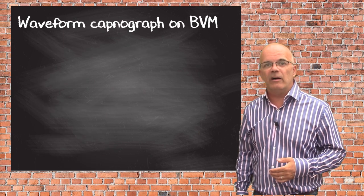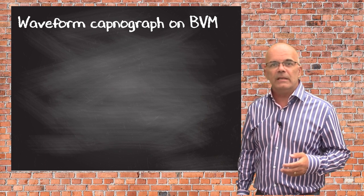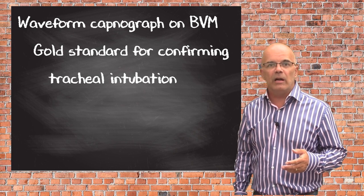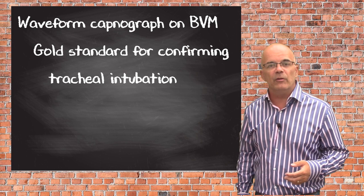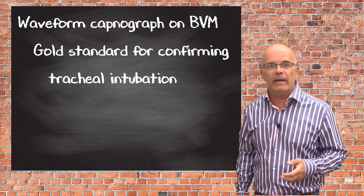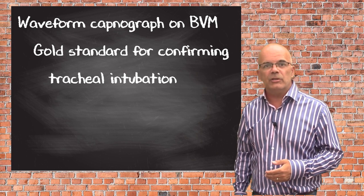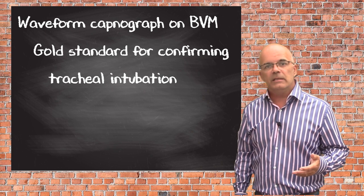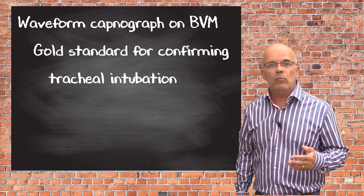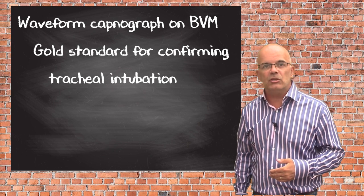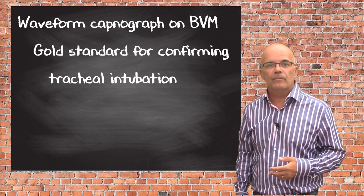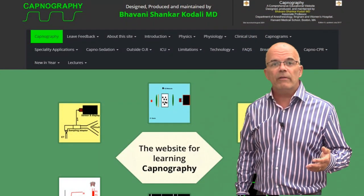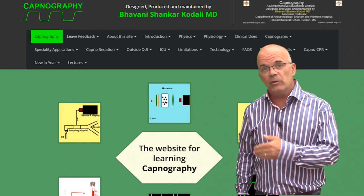Waveform capnography is the gold standard for confirming correct intubation. It is reliable and will be the first thing the practitioner checks to confirm the ET tube is in the correct place. As they bag post-intubation, they will get a good return on the waveform as the patient blows out carbon dioxide. It is better to have it attached to the BVM so it won't be forgotten when attaching to the ET tube. A great resource for learning about capnography is www.capnography.com.